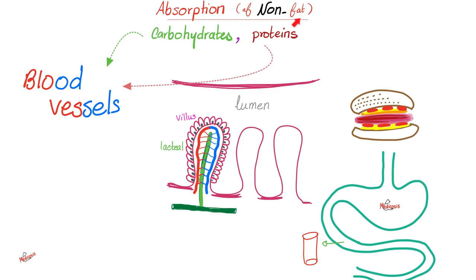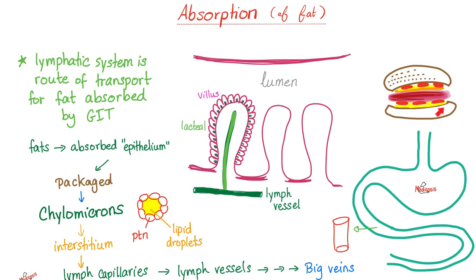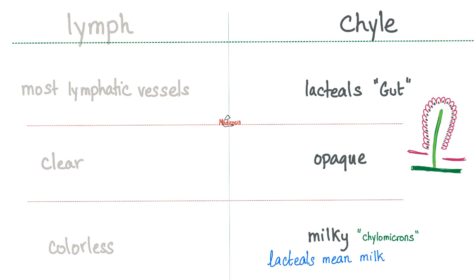If you are absorbing anything that's not fat - carbohydrates and proteins - you go to blood vessels, because these are water-soluble, and blood is plasma, which is basically water. But if you're absorbing fat, you don't go the blood route because lipid is insoluble in water. Instead, fat is taken through the lacteal, which is inside the villi lining your small intestine. These lacteals contain a fluid known as chyle, which is darker and more opaque than lymph because it's full of fat - it looks milky.